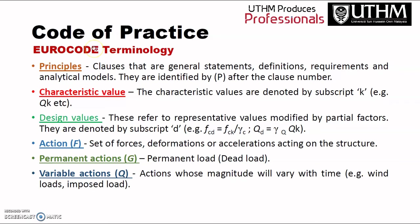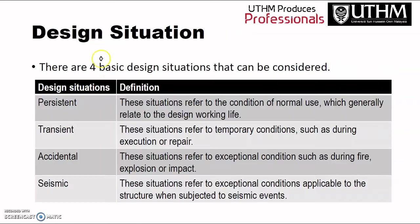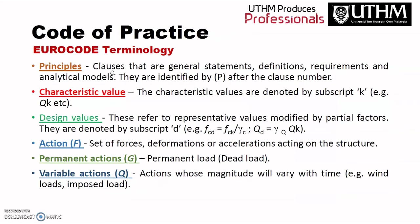You need to understand the terminology in the Euro code. Principles are clauses that provide general statements, definitions, requirements, and analytical models — they are identified by 'P' after the clause number. The characteristic value is denoted by 'k'. The design value is denoted by 'd' — for example, fcd means the design value for the compressive strength, which is fck divided by gamma c.